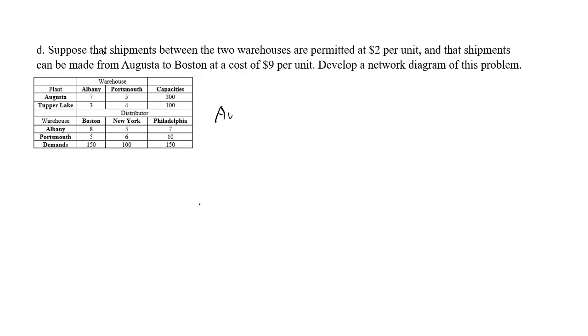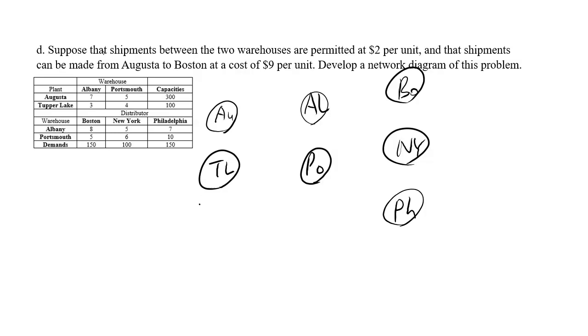So we have Augusta, Tupper Lake, Albany, Portsmouth, Boston, New York, and Philadelphia. Augusta to Albany is 7. Augusta to Portsmouth is 5. Tupper Lake to Albany is 3. Tupper Lake to Portsmouth is 4.